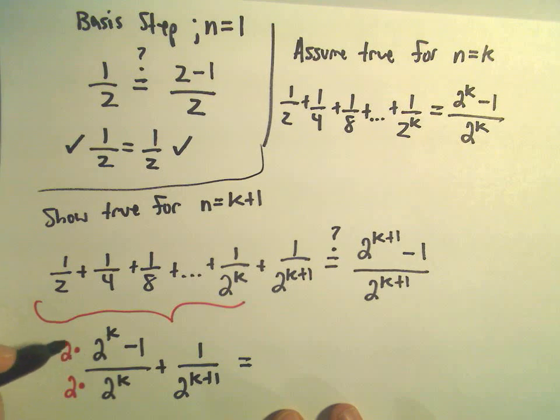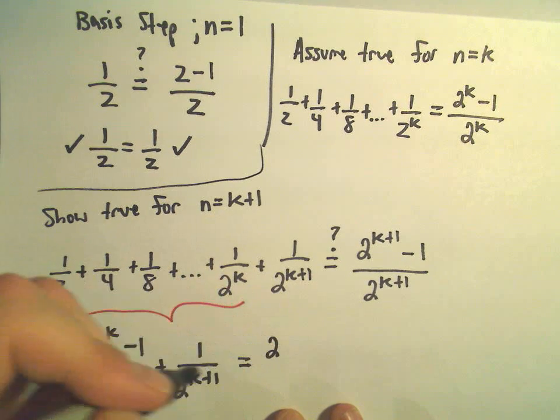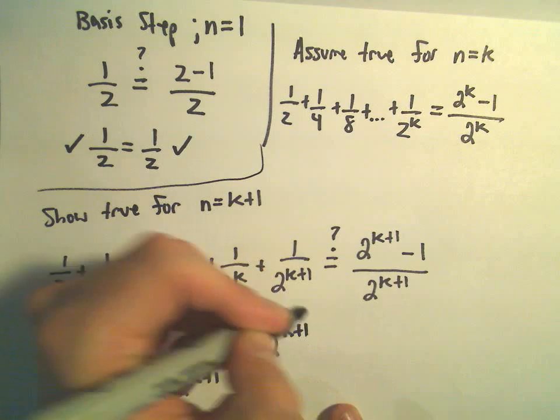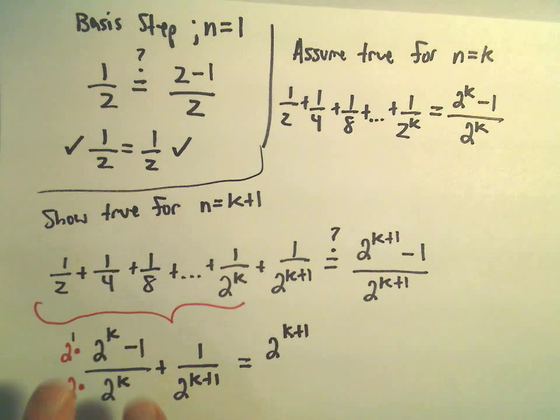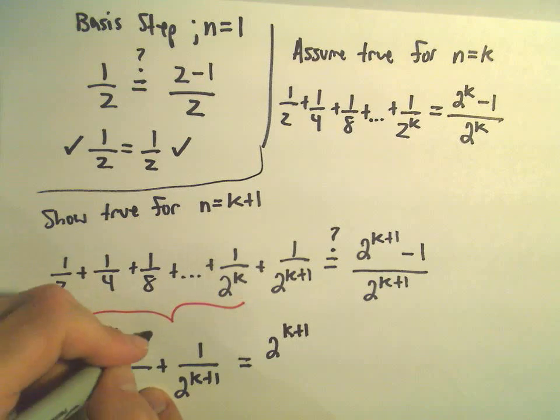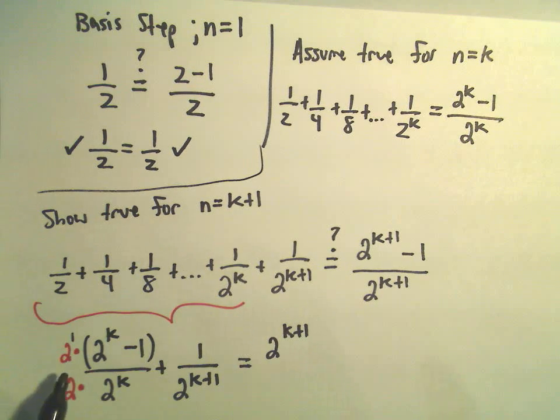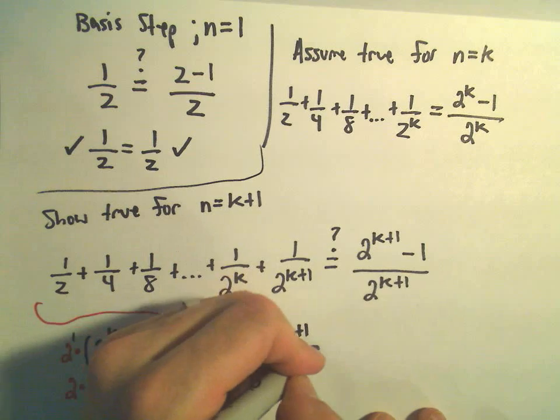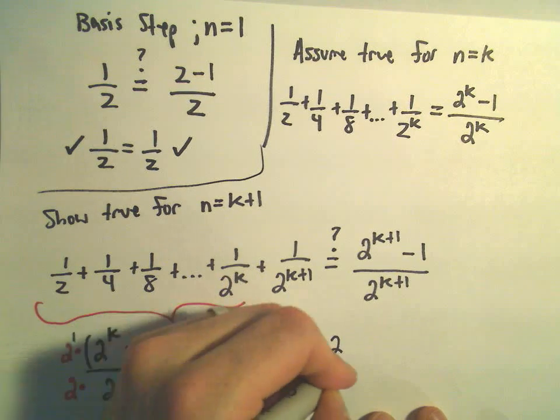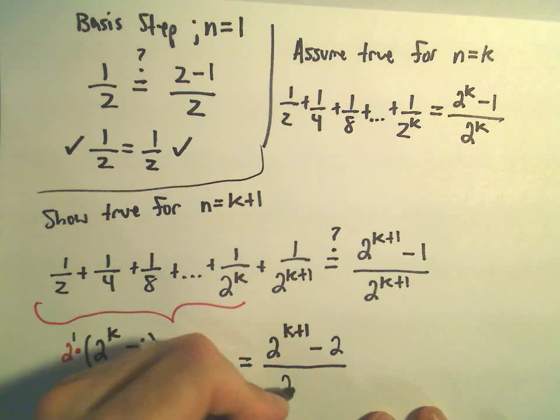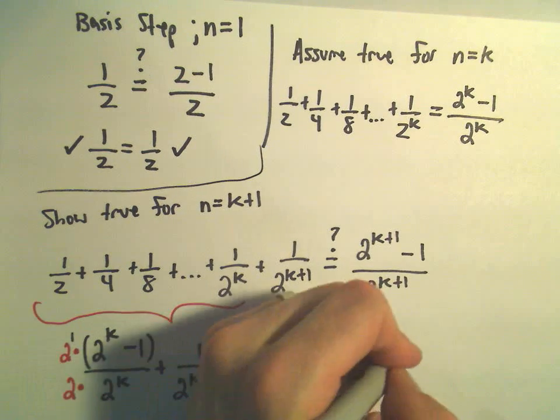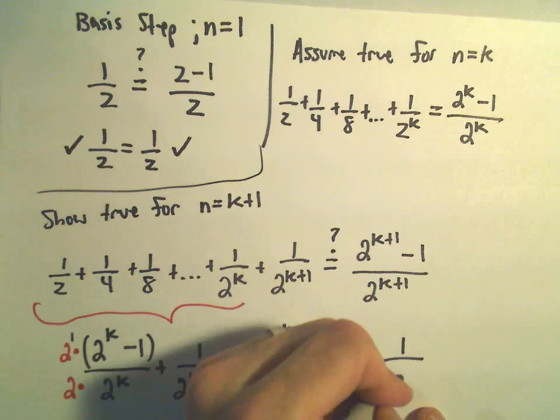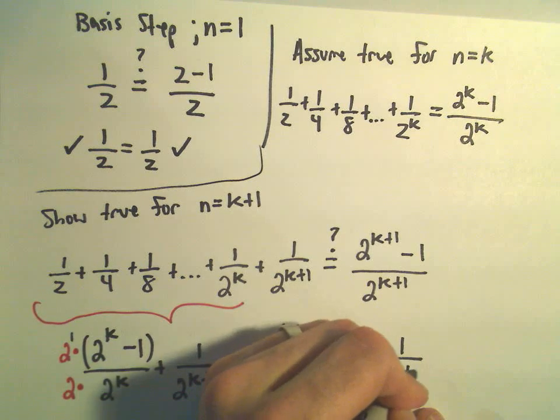it looks like if we distribute that out we'll get 2 to the k plus 1, because remember, if we have like bases, we have to add the exponents. I need to distribute that 2 to everything, so it looks like we would have a negative 2, and then we've got in the denominator 2 to the k plus 1. We still have our original 1 over 2 to the k plus 1.